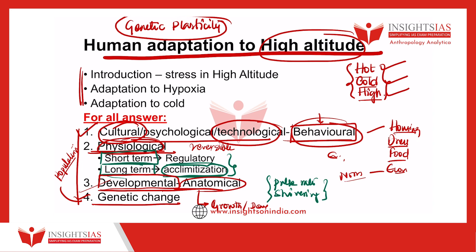You will have to write your answer under all four subheadings: cultural response, physiological short-term response, physiological long-term response, developmental changes, and genetic changes at the population level. For all these questions, this is the framework. Your introduction should contain what stresses they face — in high altitude, cold, or hot — whatever the question is. So in the first three to four sentences, explain what the stress is in that environment.